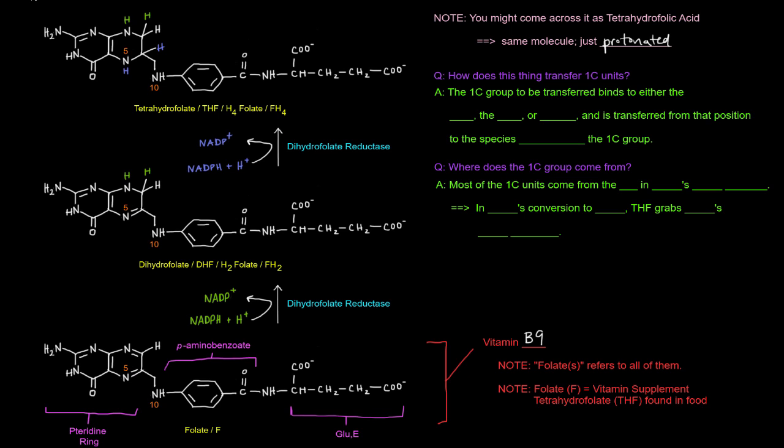So there's this question then of how exactly does this THF transfer one carbon units? Well, the one carbon unit that's going to be transferred will bind to either the N5 nitrogen, the N10 nitrogen, or both of those nitrogens, and is transferred from that position to the species that's accepting the one carbon group. And we'll see that actually in the next video.